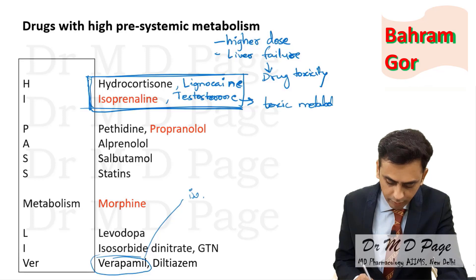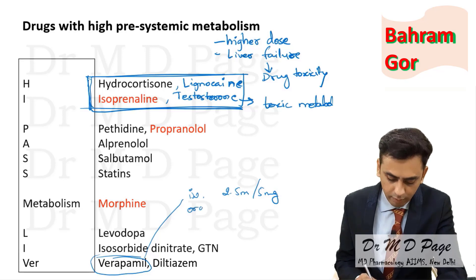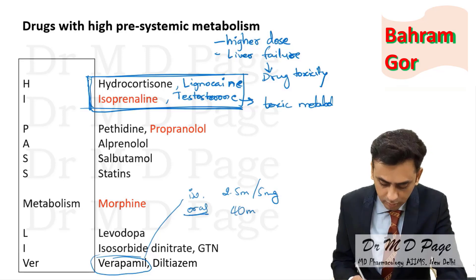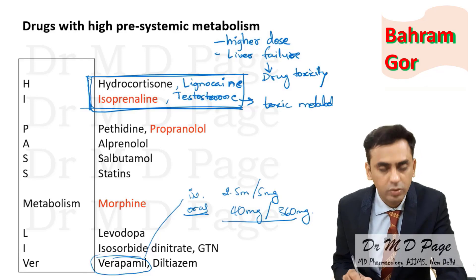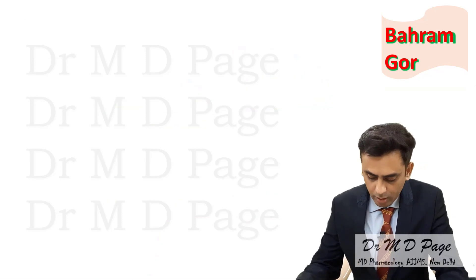To illustrate the dose difference: verapamil, when given IV, the dose is just 2.5 mg to 5 mg. When given orally, the tablets are 40 mg to 360 mg — that is the dose range used by the oral route. This highlights the significant impact of first-pass metabolism on the required oral dose.